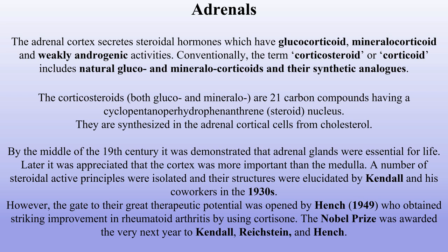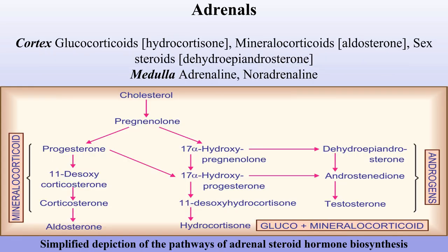The gate to their great therapeutic potential was opened by Hench in 1949, who obtained striking improvement in rheumatoid arthritis by using cortisone. The Nobel Prize was awarded the very next year to Kendall, Reichstein and Hench. Hormones produced in the adrenal cortex include glucocorticoids, mineralocorticoids and sex steroids; in the adrenal medulla, adrenaline and noradrenaline. Below you can see the simplified depiction of the pathways of adrenal steroid hormone biosynthesis.